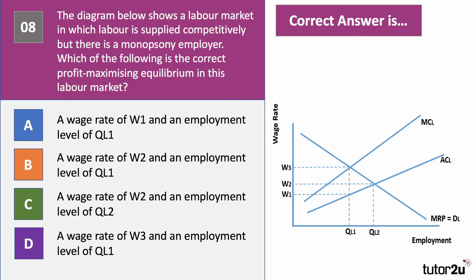The right answer to question eight is A. With a profit-maximising monopsony, you employ people to the point where the marginal labour cost equals the marginal revenue product, which is employment level QL1. In theory they could pay wage W3, but in fact they only need to use the labour supply curve — the average cost of labour — as their guide, so they can employ QL1 workers at wage W1. That's not a socially optimum wage; they're paying below what might be seen as socially optimal. This is a potential cause of labour market failure.